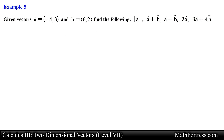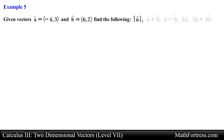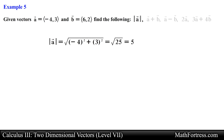Let's go over the final example. Given vectors A and B, find the following. We are given vectors A and B in component form. We are asked to find the magnitude of vector A, the sum of vector A and vector B, the difference of vector A and vector B, 2 times vector A, and the sum of 3 times vector A and 4 times vector B. Let's first find the magnitude of vector A. To find the magnitude of a vector in component form we take the square of each of the components, add them together, and then take the square root of the result. Carrying out these operations we obtain 5 as the magnitude of vector A.